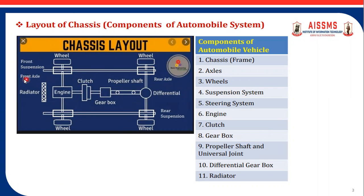The chassis layout includes several components: axles — one front and one rear; wheels, which may be two, four, six, or eight depending on the type of vehicle; suspension system with front and rear suspensions; steering system present on the front end; engine, which is the first component of the power transmission system; clutch; gearbox; propeller shaft with universal joints and differential gearbox; and the radiator, which is present at the front end of the vehicle.